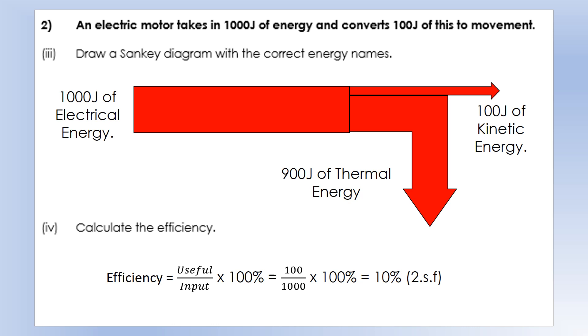Efficiency is going to be useful, 100 divided by input, 1000 times 100 gives us 10%.